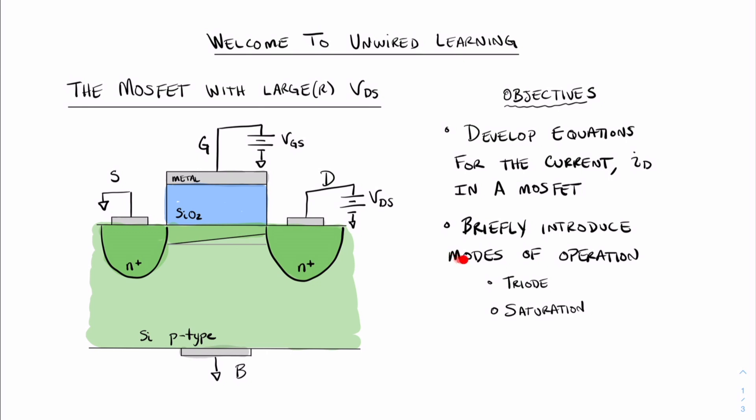This will give rise to the idea of modes of operation in the MOSFET. In particular, we're going to talk about two modes, triode mode and saturation.